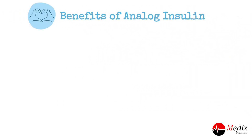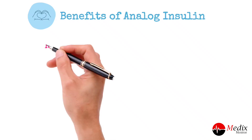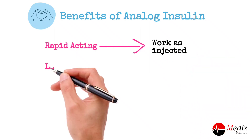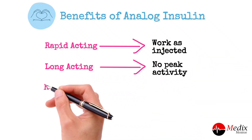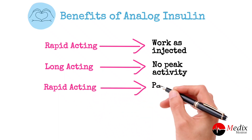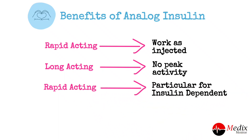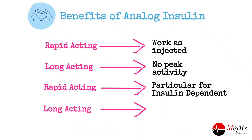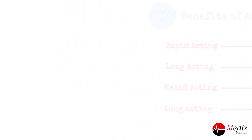The primary benefits of analog insulins are that rapid acting insulins work as soon as injected and long acting insulins have no peak activity. Rapid acting insulins are particularly useful for insulin-dependent people, as they help minimize sharp rises in blood sugar shortly after eating. Long acting analog insulins have become more popular because their predictable action gives people more confidence that they will avoid nighttime hypos.